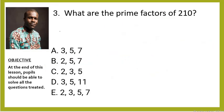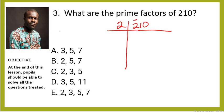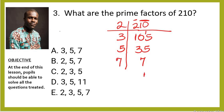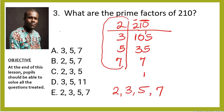Question number three: what are the prime factors of 210? To get the prime factors, solve as if finding the LCM. 210 divided by 2 is 105; 105 divided by 3 is 35; 35 divided by 5 is 7; 7 divided by 7 is 1. The prime factors are the divisors used: 2, 3, 5, and 7. The right option is option E.